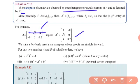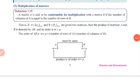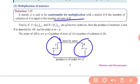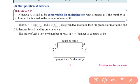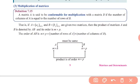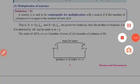The transpose of a matrix is obtained by interchanging its rows and columns. For matrix addition, the order of the matrices must be equal. For matrix multiplication, if matrix A is of order m×n and matrix B is of order n×p, the number of columns in the first matrix must equal the number of rows in the second matrix for multiplication to exist.